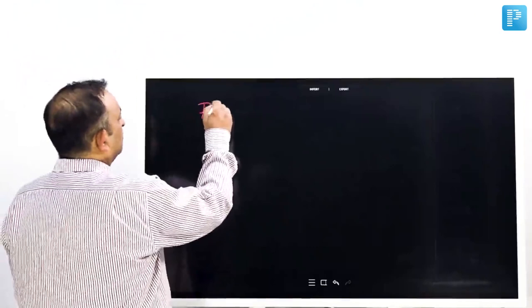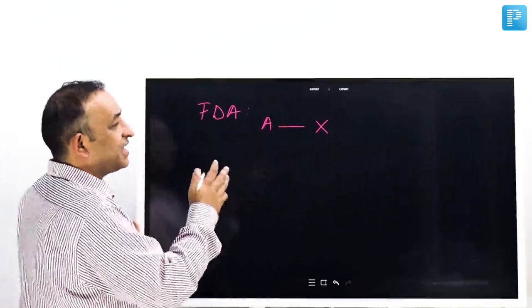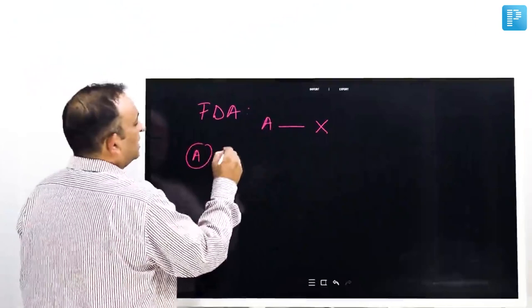Some drugs may have problems for the fetus but still have to be given because the benefits are better, and some drugs are not to be given at all. Drugs in pregnancy by the FDA have been categorized from A to X—not A to all the alphabet, but A, B, C, D, and X. So there are five categories.